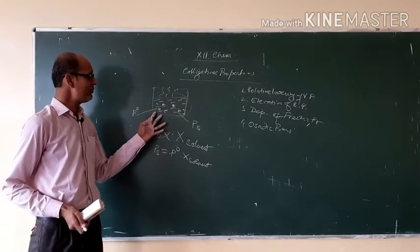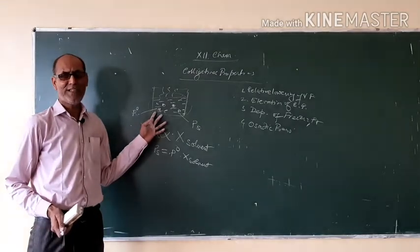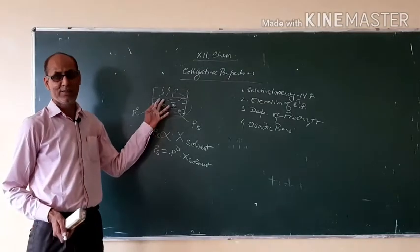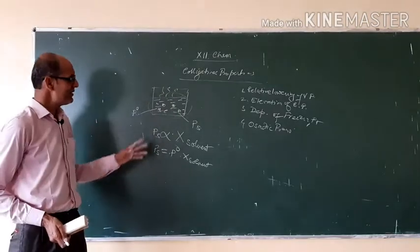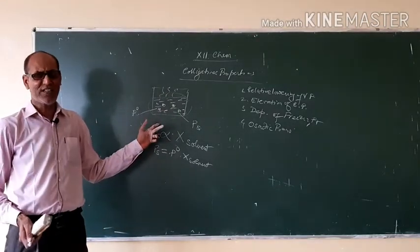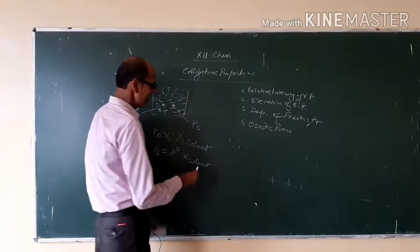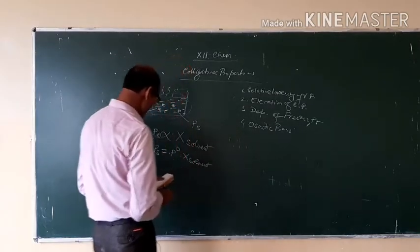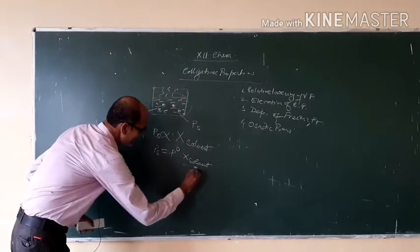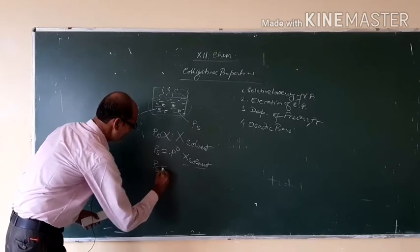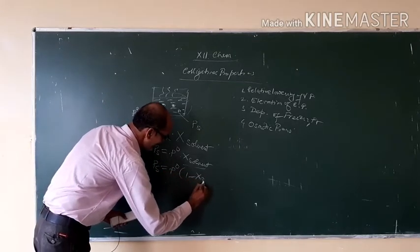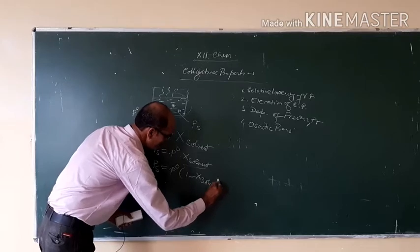When a solution is prepared, there are two components: solute and solvent. The mole fraction of solute and solvent will be equal to 1. Here we can write PS equals P0 times (1 minus X solute).